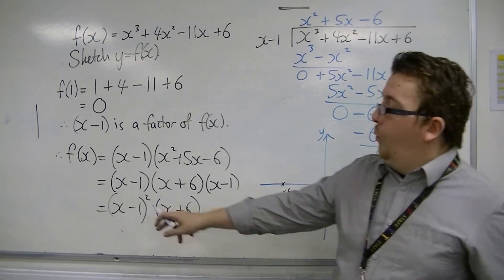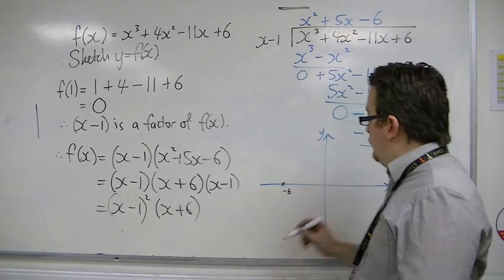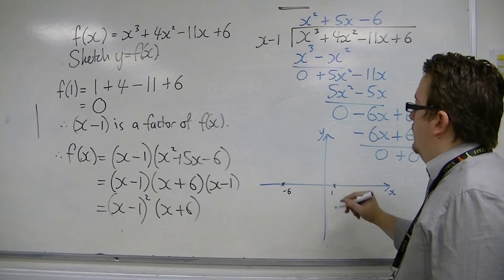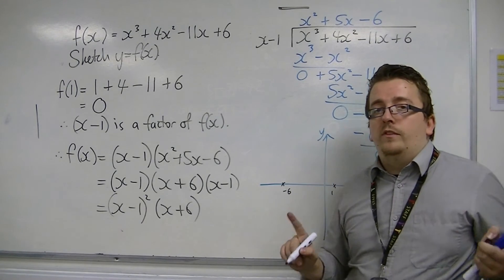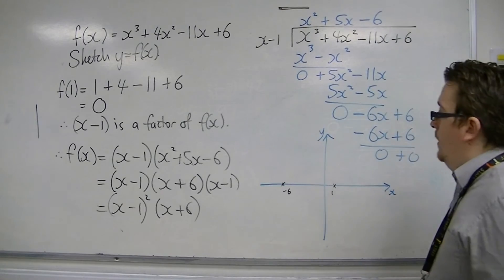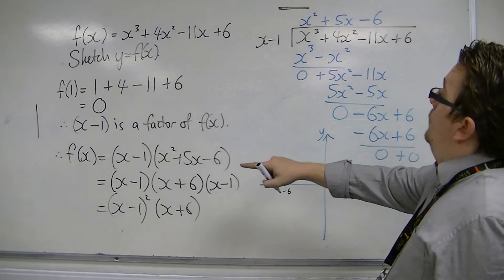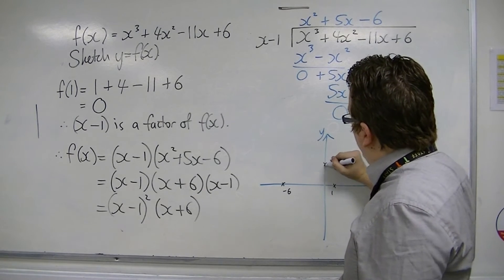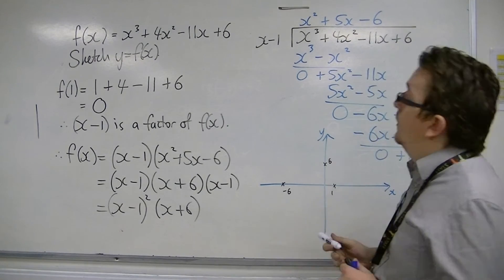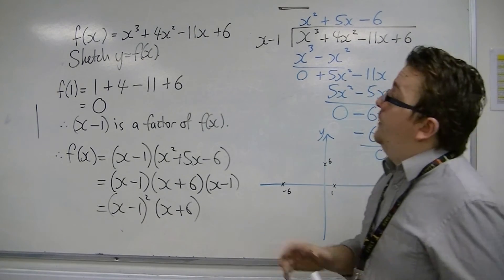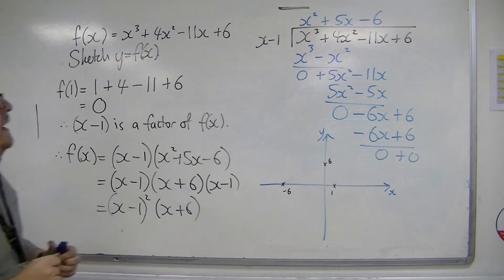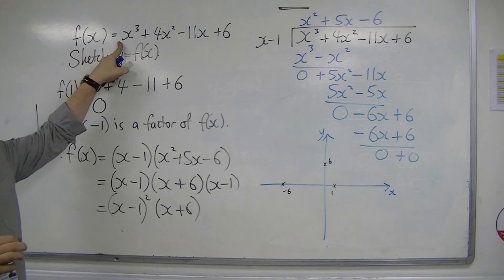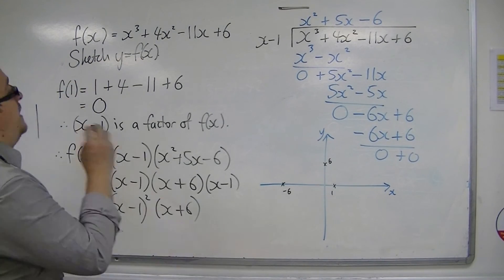but because 1 is a repeated root, that must mean that it just touches the x-axis at 1. We also know that it goes through 6 on the y-axis, and that it must be a positive cubic, because the number in front of the x³ is positive.